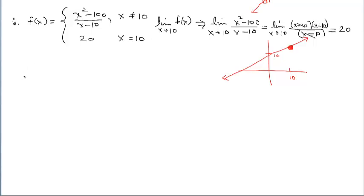We're going to continue finding limits analytically, but now we're going to change our technique. In the first video we were using the dividing out technique. Now we're going to use the rationalizing technique. You might remember that word rationalizing from your earlier courses where you try to get the square root out of the denominator — it's similar to that.